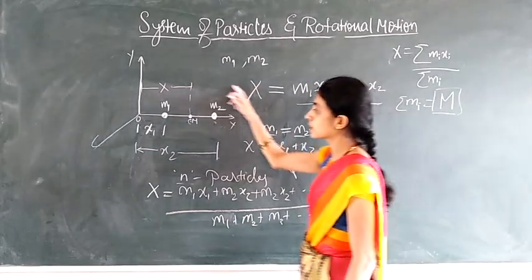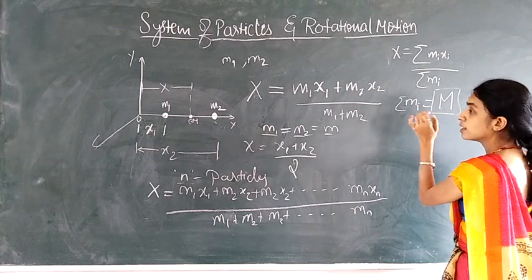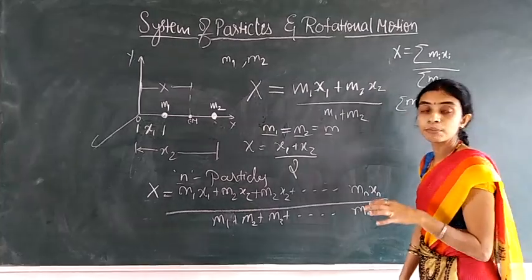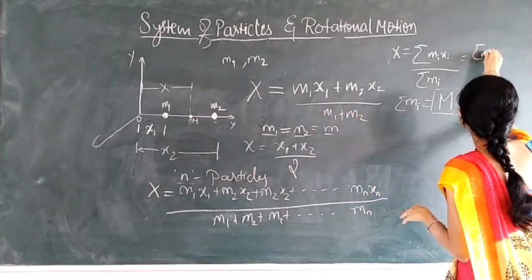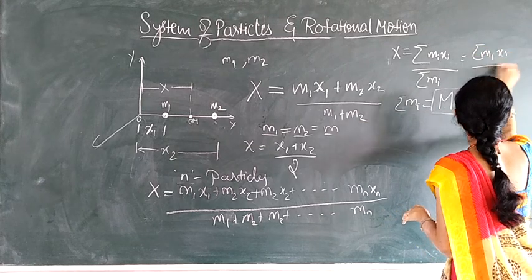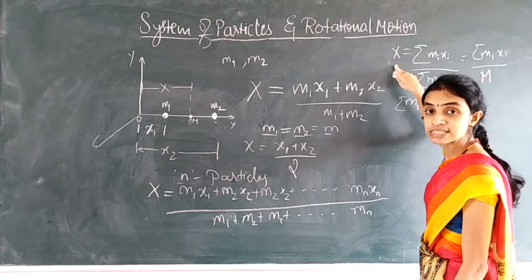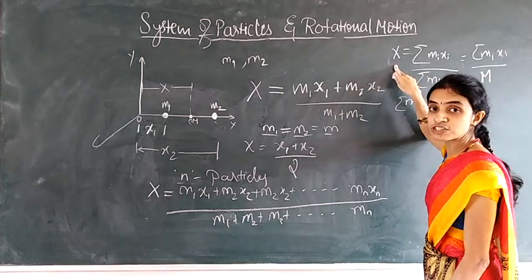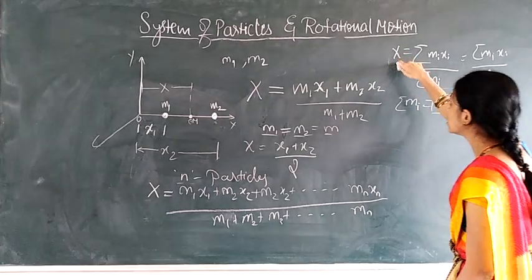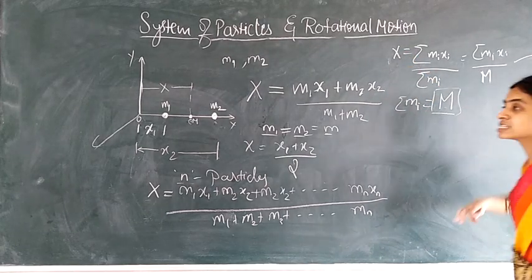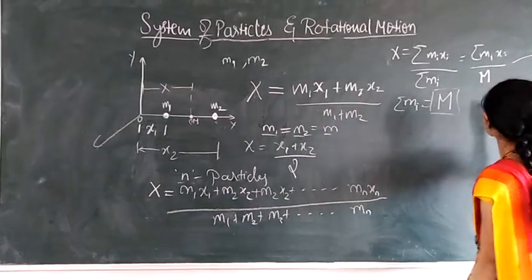If the two masses are equal, the expression simplifies to X = (x1 + x2) / 2, which indicates that the center of mass lies exactly at the midpoint between the two particles. For n number of particles along the x-axis, the formula becomes X = (m1·x1 + m2·x2 + m3·x3 + ... + mn·xn) / (m1 + m2 + ... + mn), which can be written using summation notation as X = Σ(mi·xi) / M, where M is the total mass.